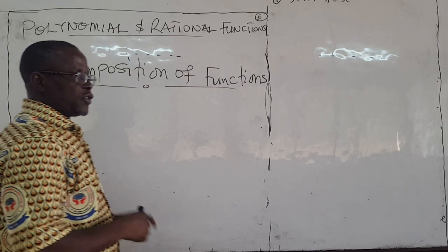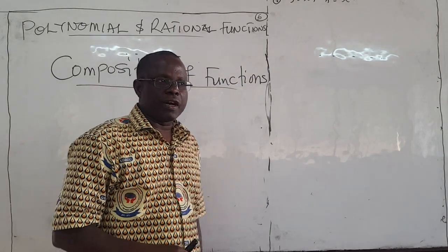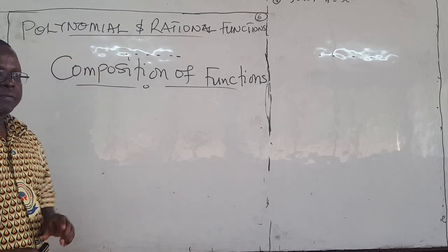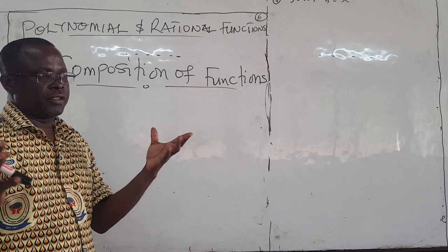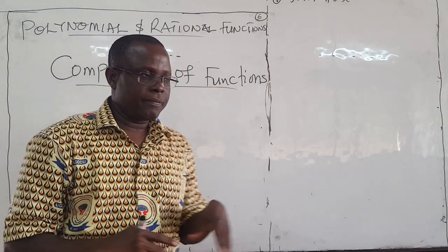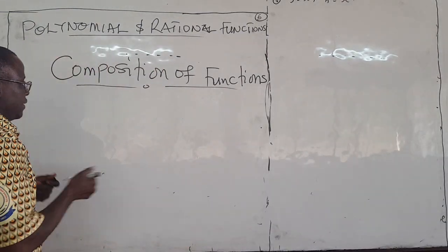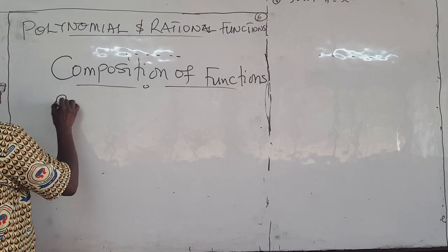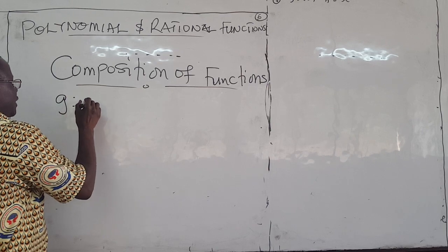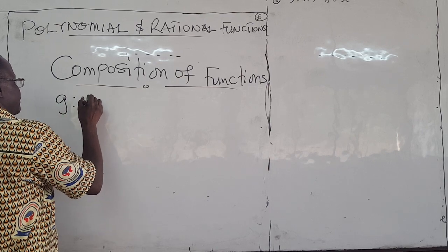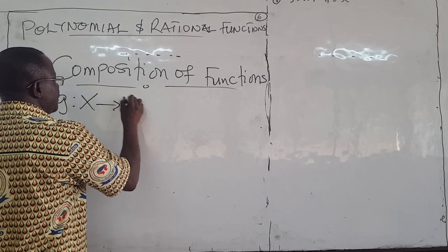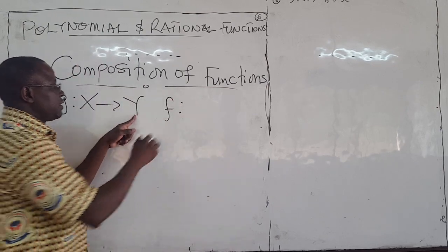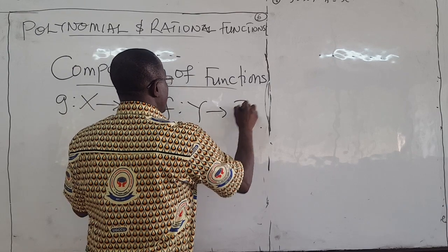Hello guys, so we want to finish up this part of our lessons with compositional functions. Given two functions, you can compose them. Suppose that you have two functions: G takes elements from X to Y, and you have another function F that takes elements from Y to Z.